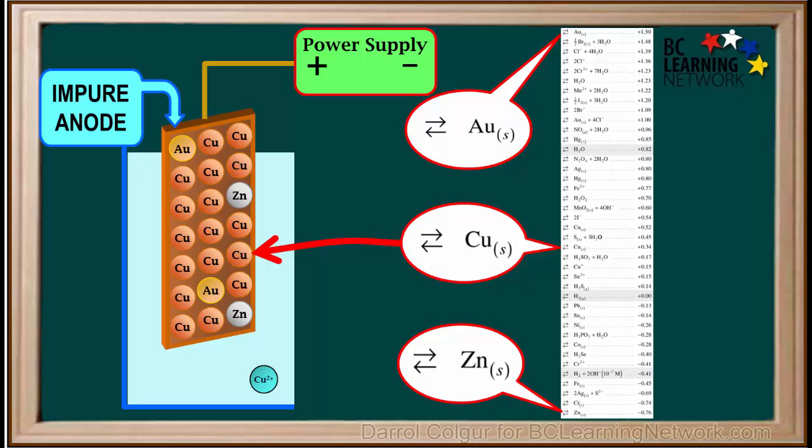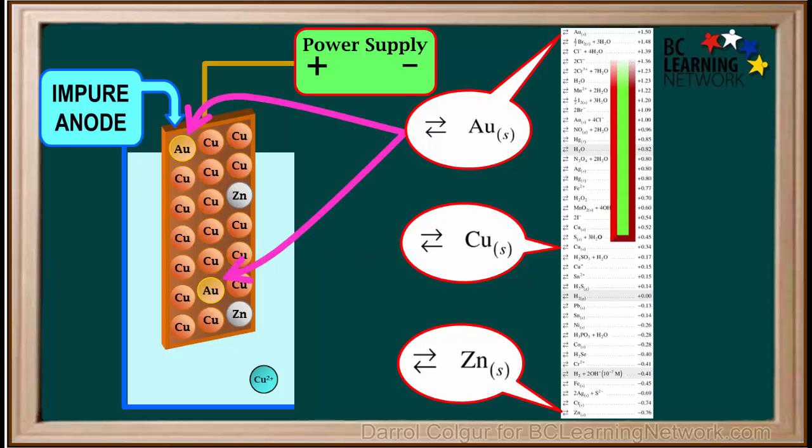Copper is a metal we're purifying, so the impure sample is mainly copper atoms. The gold atoms we added can represent any metals that are above copper on the right side of the reduction table. This includes gold, silver, and mercury. Anything we say about gold on this video applies equally to all metals above copper on the right side of the table.